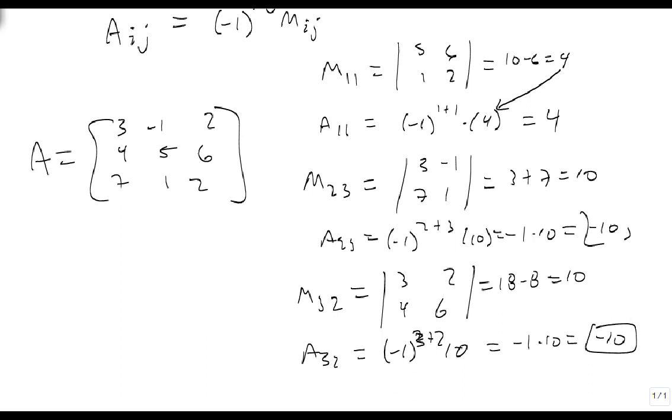So all we need to do to find our cofactors is to take the minors we just found and change their sign based on whether the sum of the row and the column is even or odd.